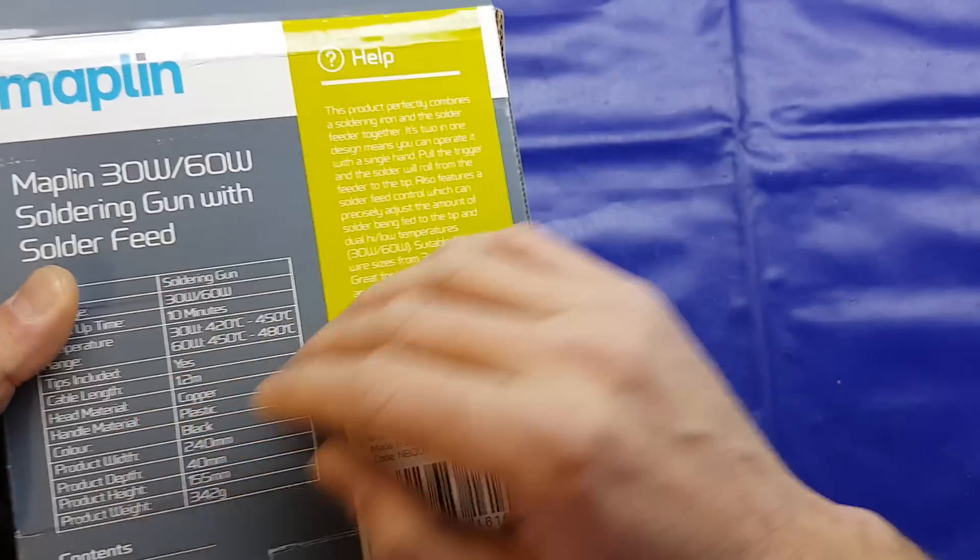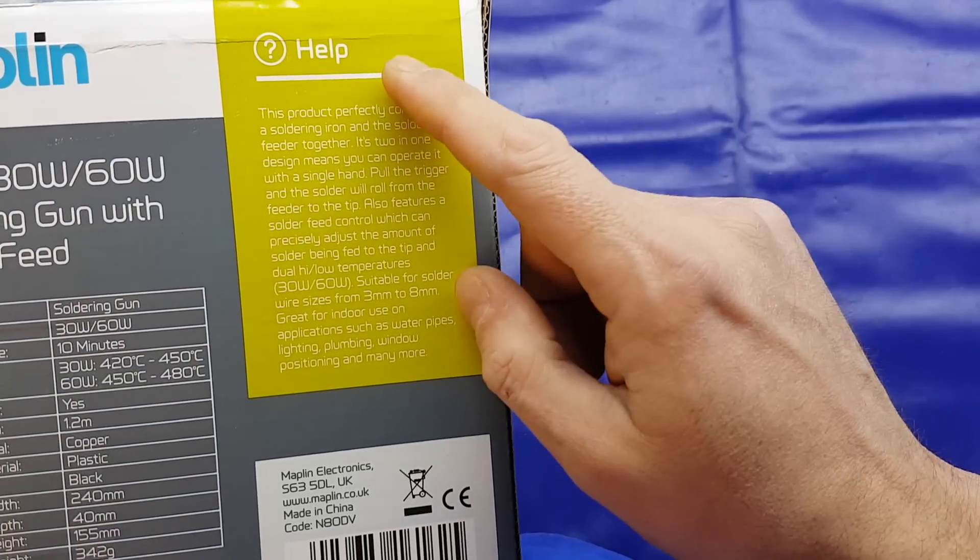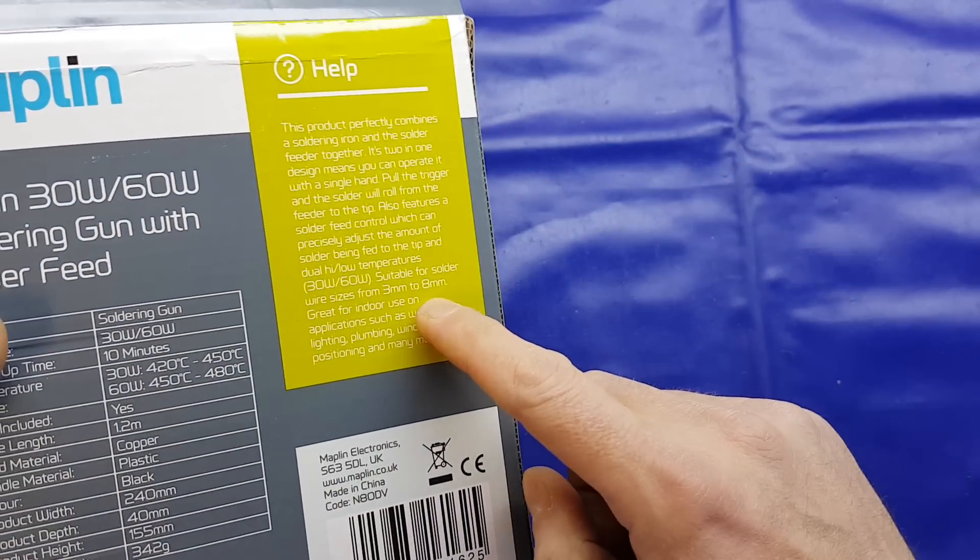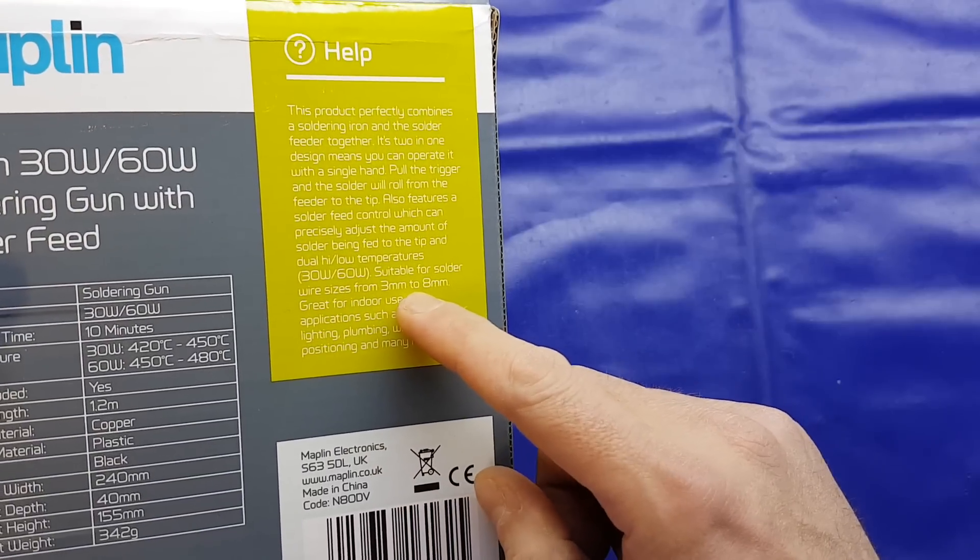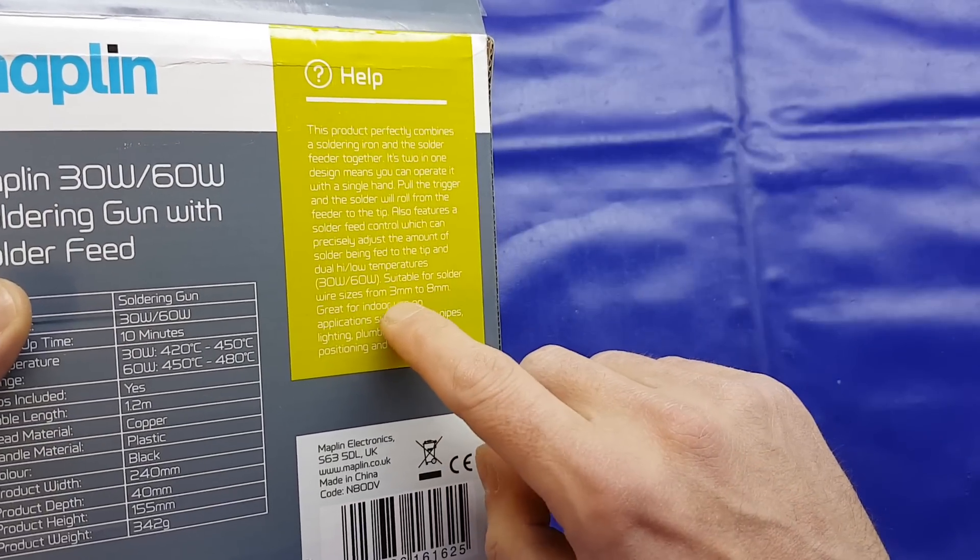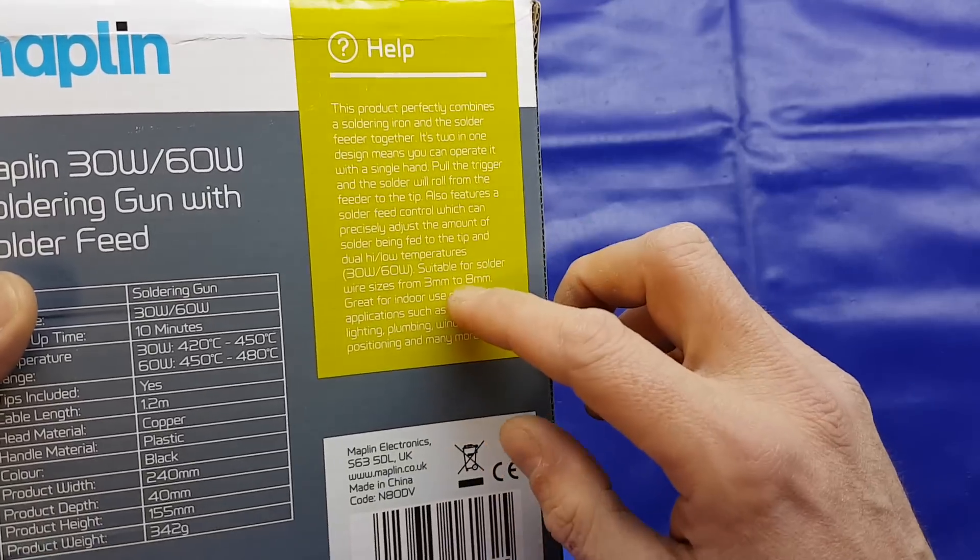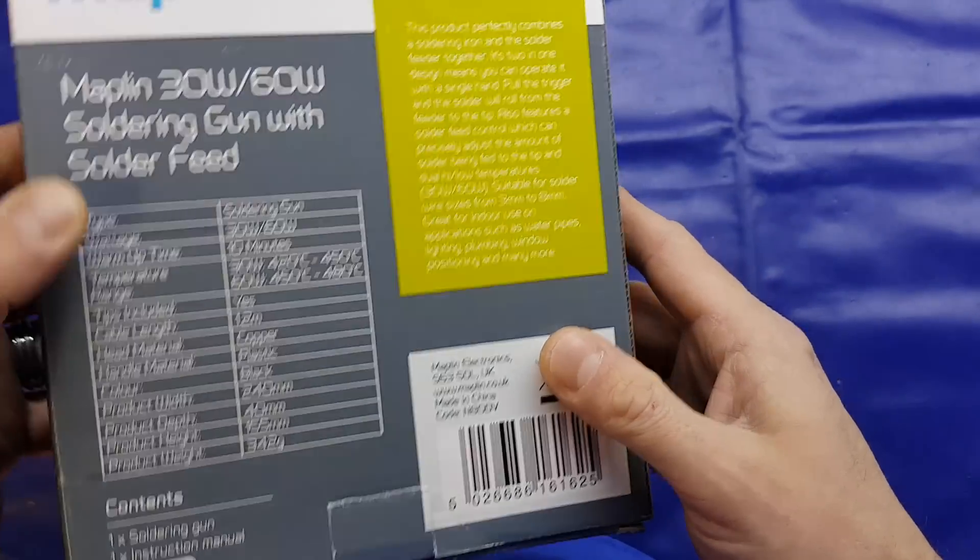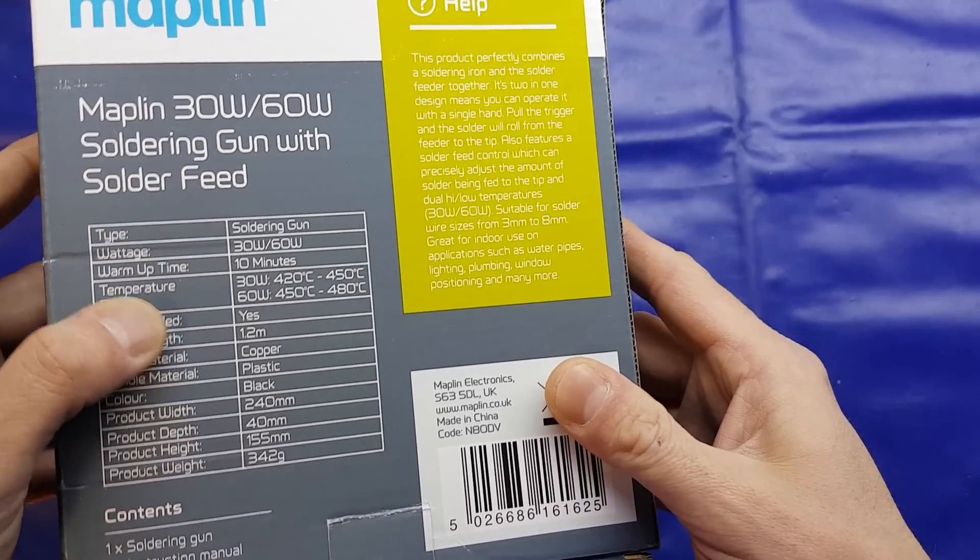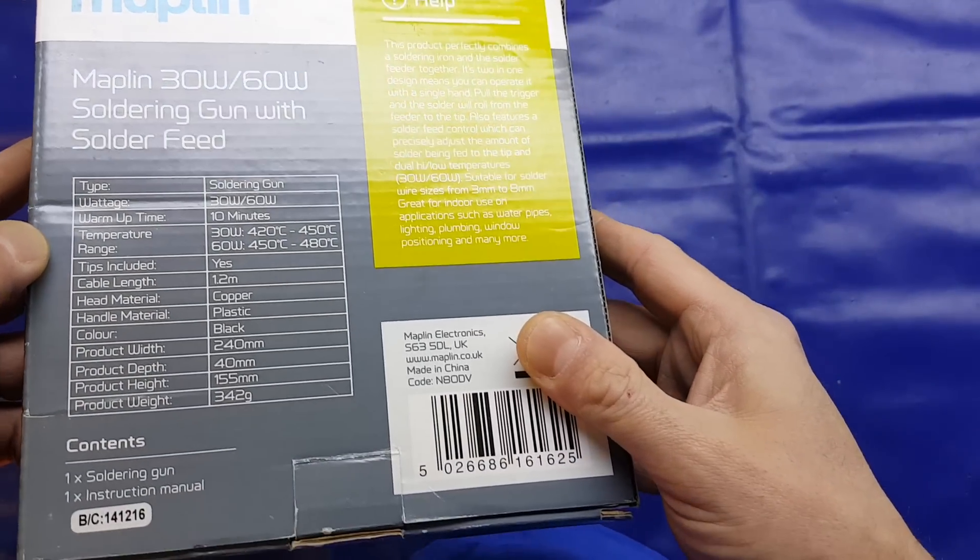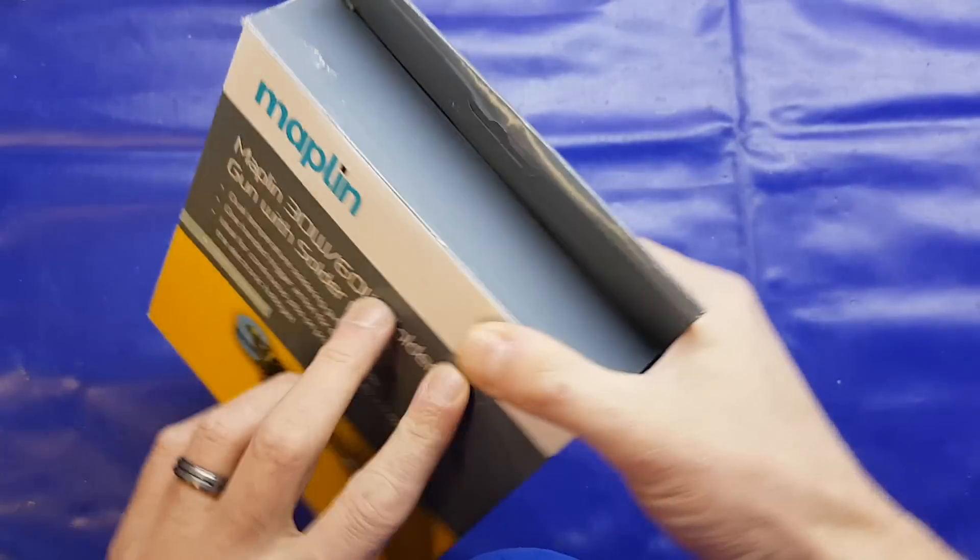We've got more specifications here. I'm not going to read through it all, but there's one bit on here. Suitable for solder wire sizes from 3 to 8mm. I don't know what they mean by that, but possibly might get 3mm solder, but 8mm solder? I don't think so. 10 minutes warm-up time. There's nothing else really to say about it. So we'll open it up and have a look inside.